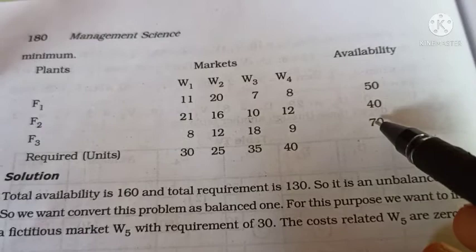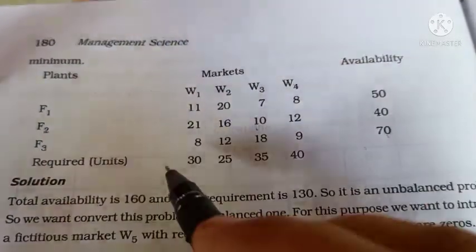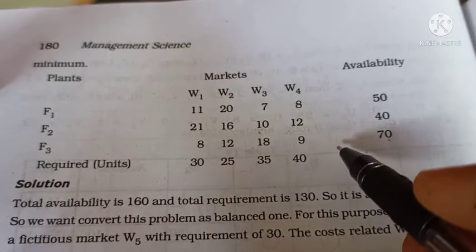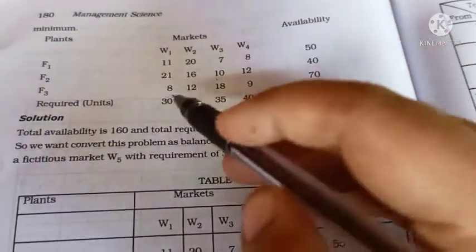That is, the total availability is 160 and the total requirement is 130.